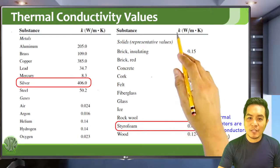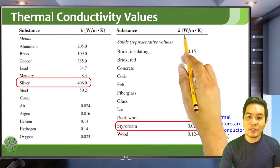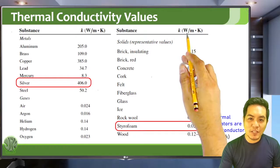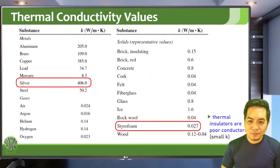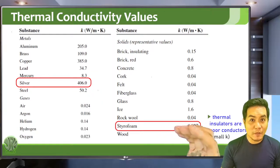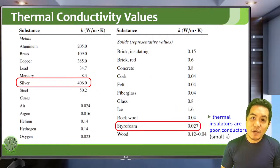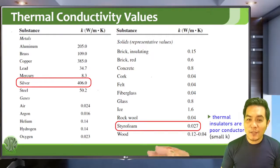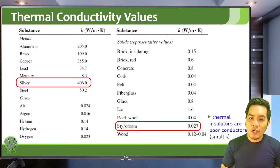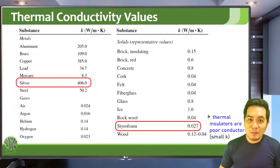The unit of K, thermal conductivity, is watts per meter Kelvin. Styrofoam is a good example of a thermal insulator — when you place hot coffee in a styrofoam cup, heat travels very slowly from the coffee to your hand, so you won't get hurt. Poor thermal conductors are actually good thermal insulators.